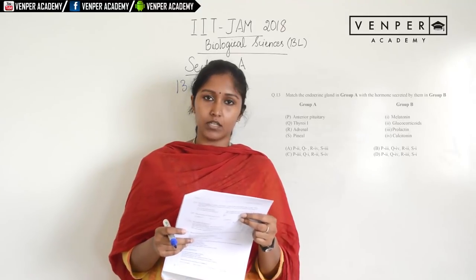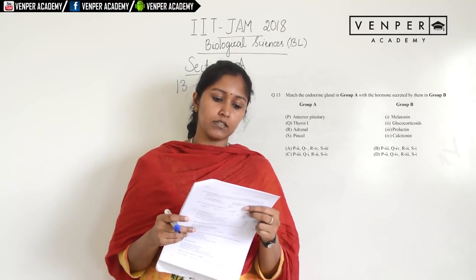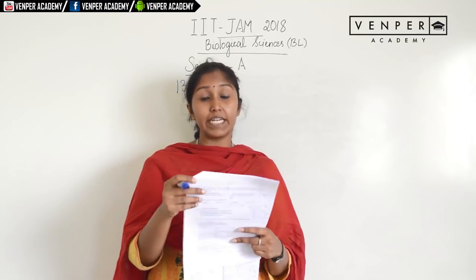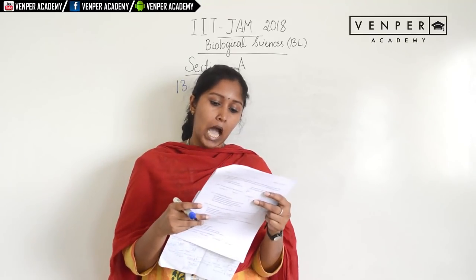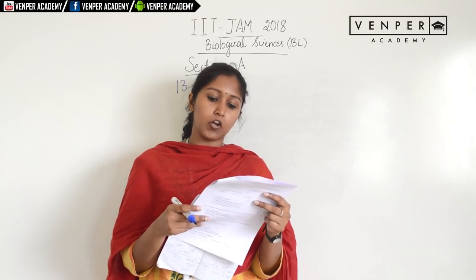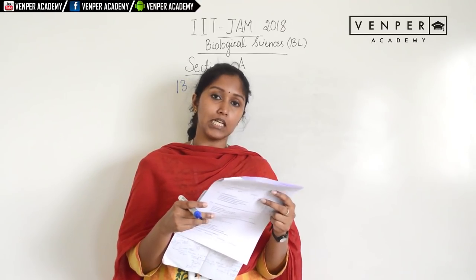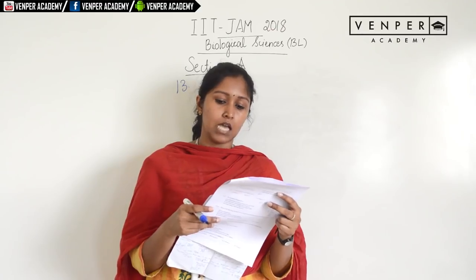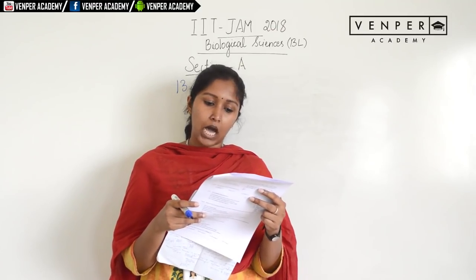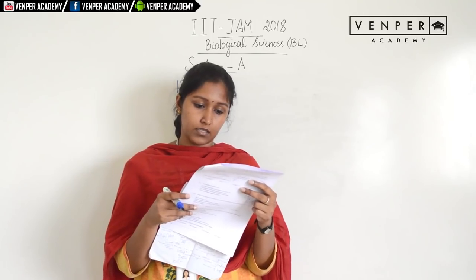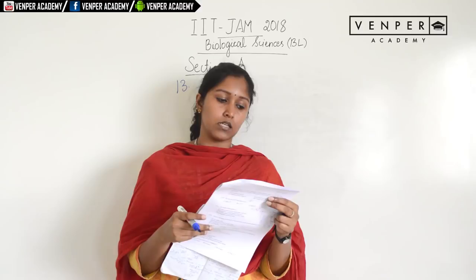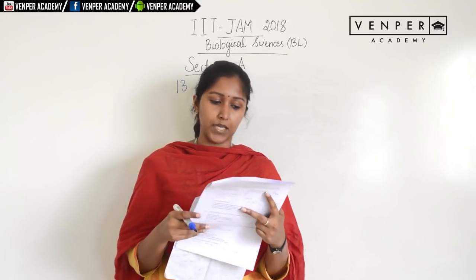Question 13: match the endocrine gland in group A with the hormones secreted by them in group B. The answers are: anterior pituitary — prolactin; thyroid — calcitonin; adrenal — glucocorticoid; pineal — melatonin. Therefore P3, Q4, R2, S1. The answer for question 13 is option B.